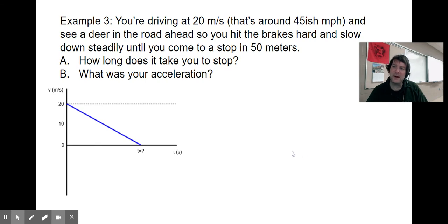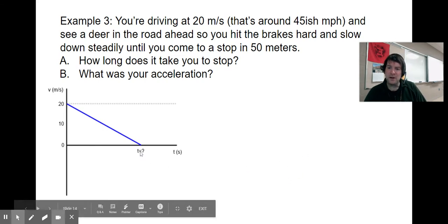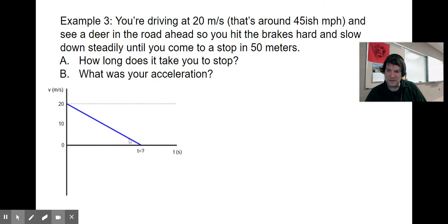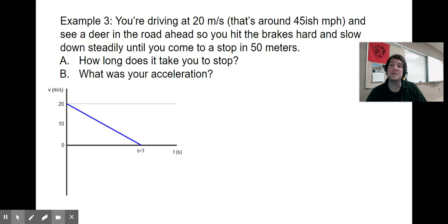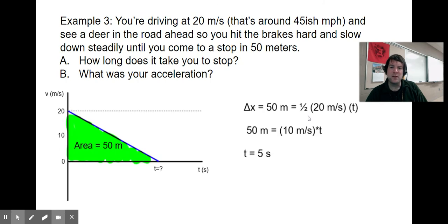First, we draw our graph. Some differences here: I don't know a value for time, that's an unknown. But I do know I'm starting from 20 meters per second and going down to zero meters per second. We might wonder how can I even solve this? But let's keep in mind we do know the area of that graph is 50 meters, and I can use the exact same relationships as before.